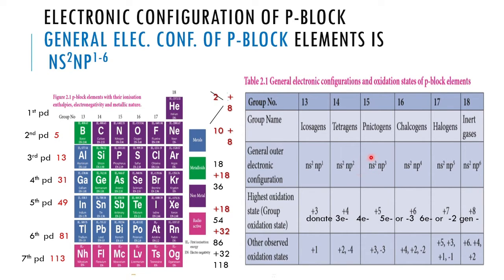For the chalcogen family (Group 16), with 6 outermost electrons, accepting 2 electrons gives -2 oxidation state, donating 4 gives +4, and donating 2 gives +2. For halogens (Group 17), with 7 outermost electrons, they readily accept one electron to attain -1 oxidation state. Noble gases (Group 18) already have 8 electrons and are generally inactive.